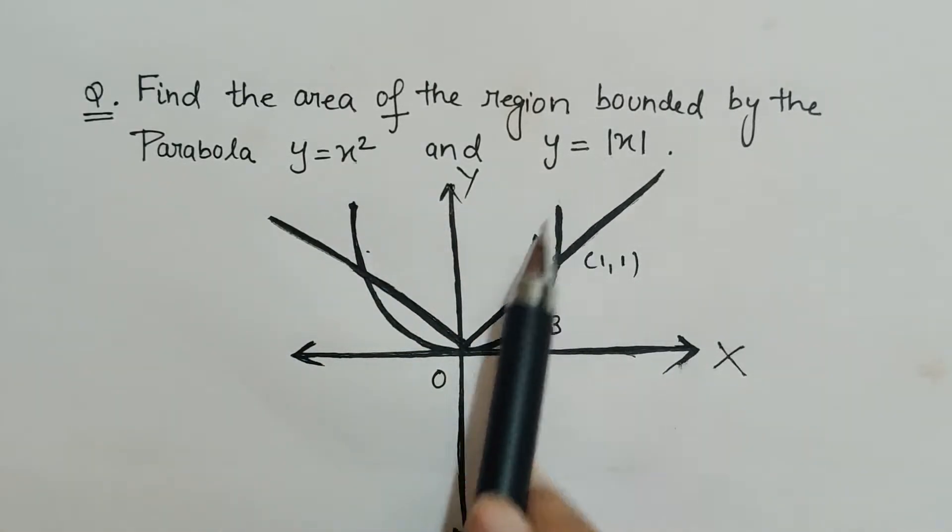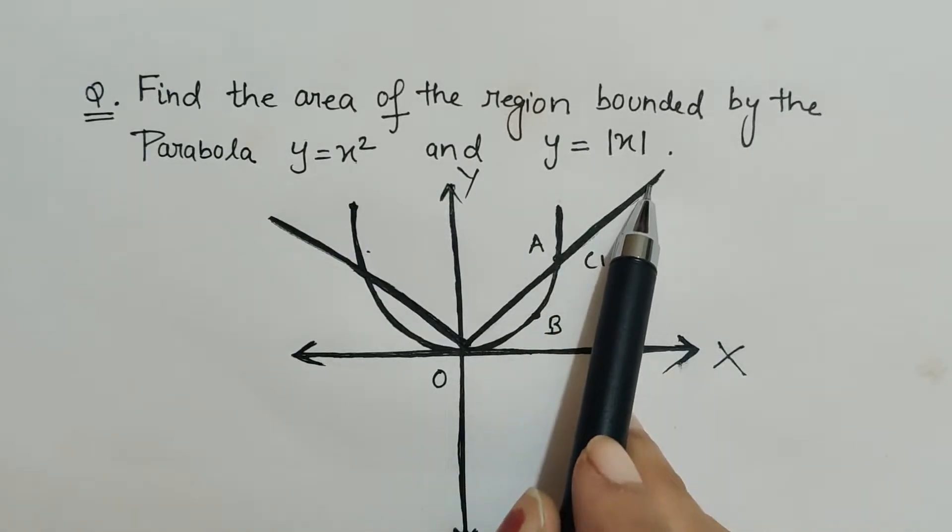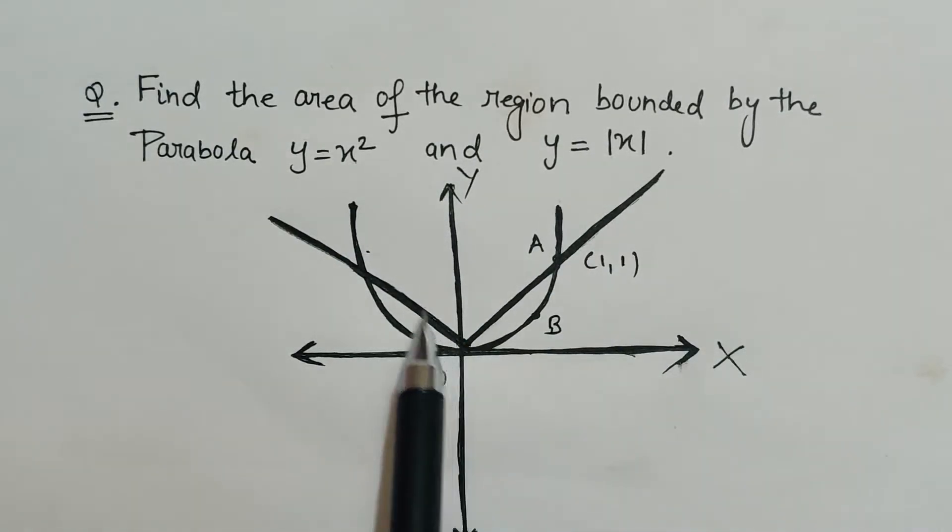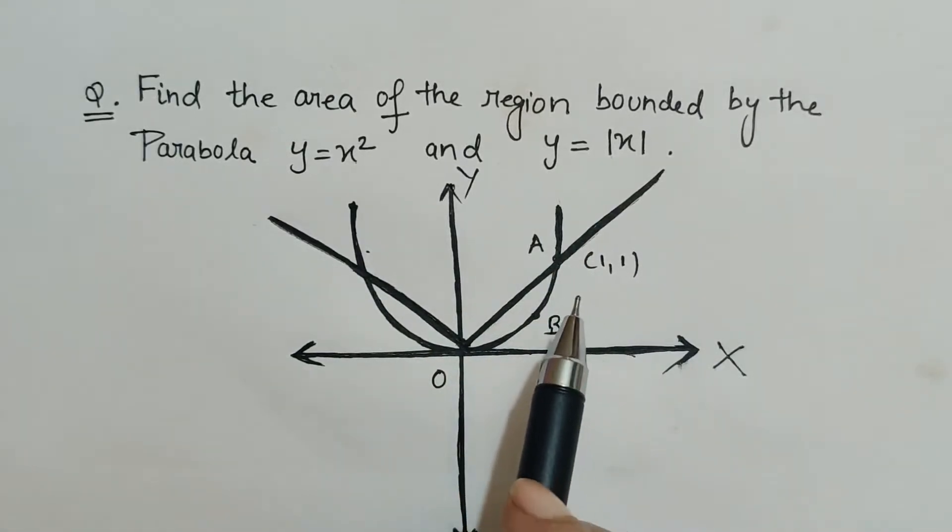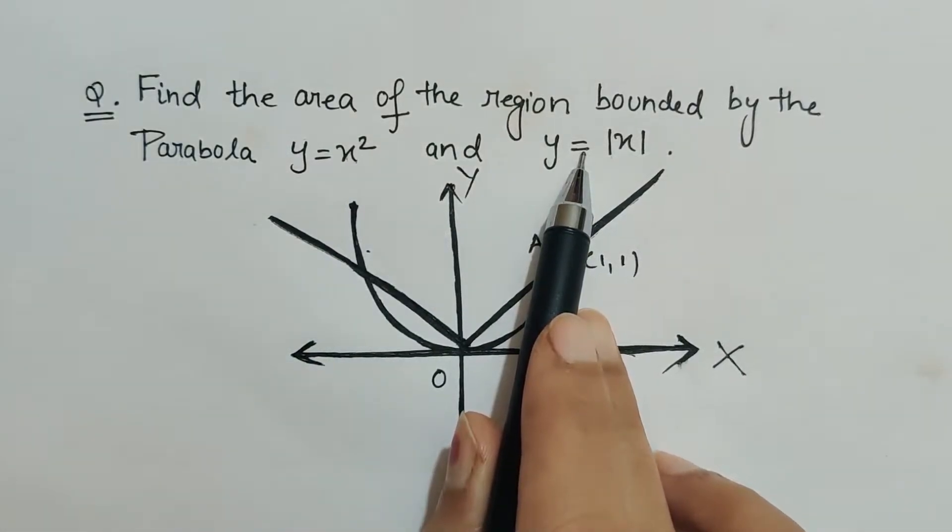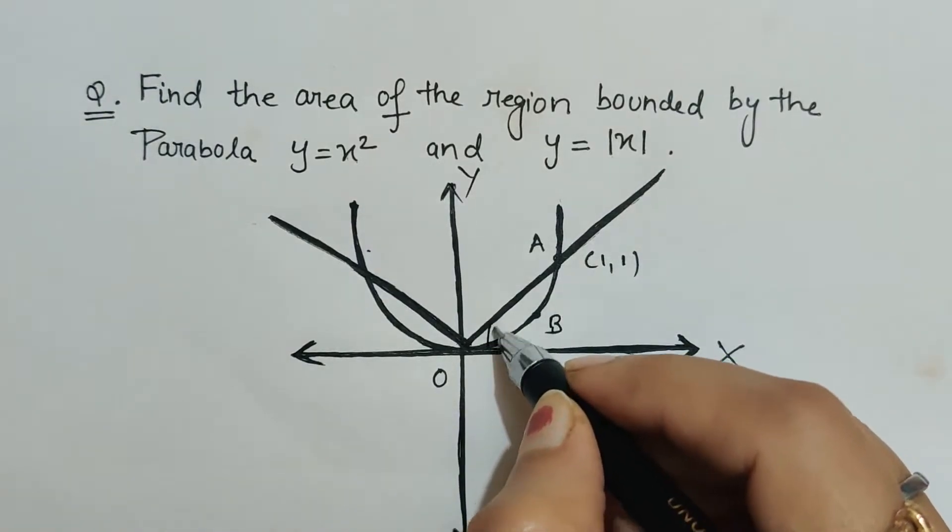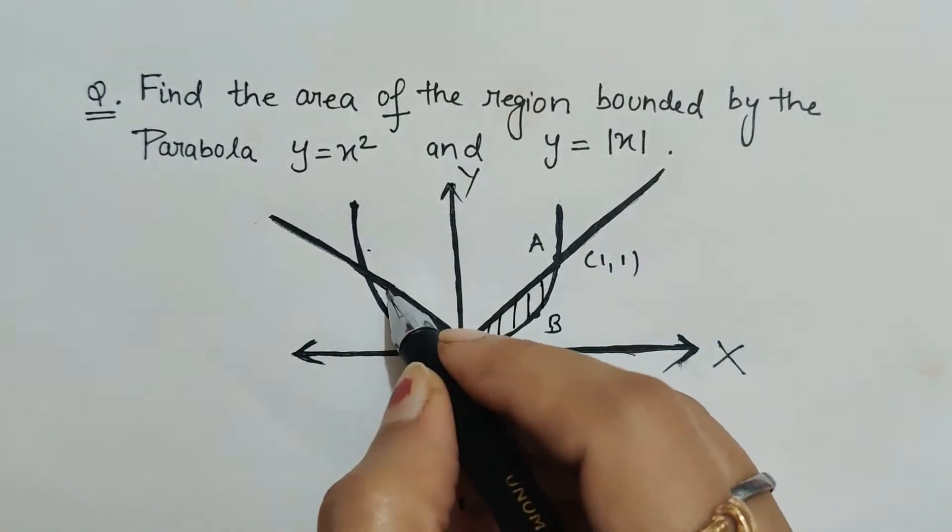Next is y equals mod x, that means the straight line on the positive side as well as straight line on the negative side. Next we have to find the area bounded by these two curves. So here, that means we have to find the area of this shaded region.